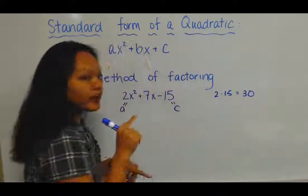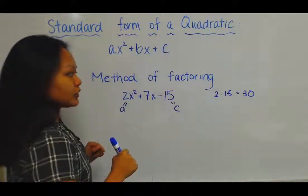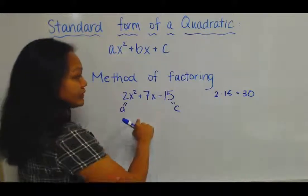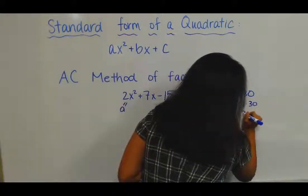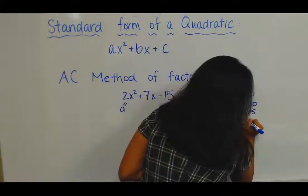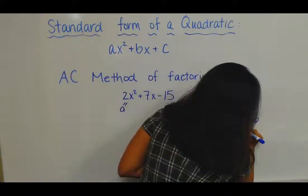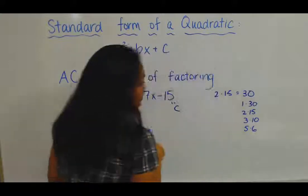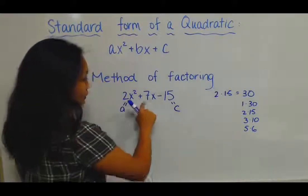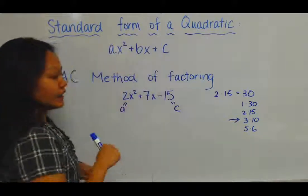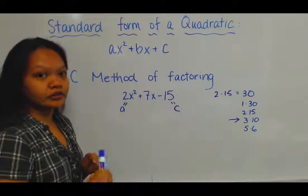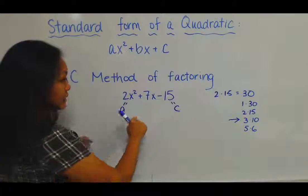Then you would find factors of 30 that when you add or subtract them will equal positive 7. So the factors of 30 are 1 and 30, 2 and 15, 3 and 10, and 5 and 6. When you look at these, you want to add or subtract so that you would get positive 7, which would be 3 and 10. And you want the larger number to be positive because 7 is positive.